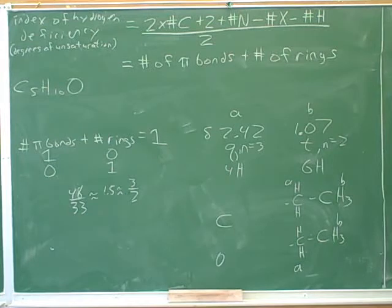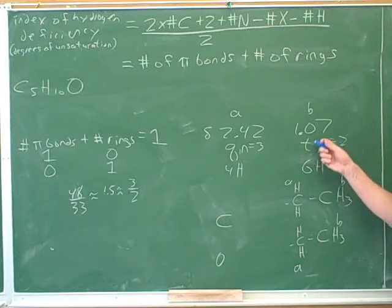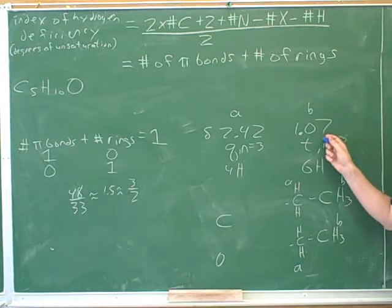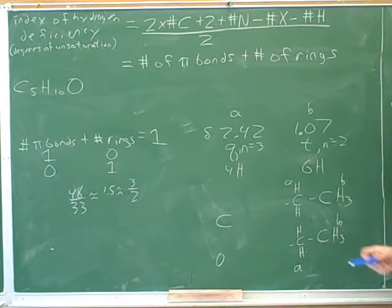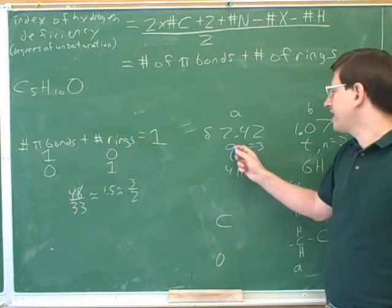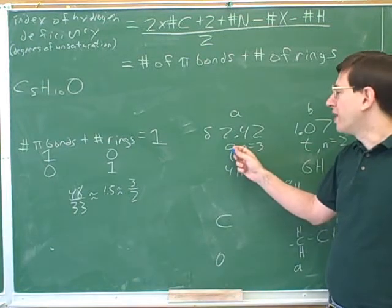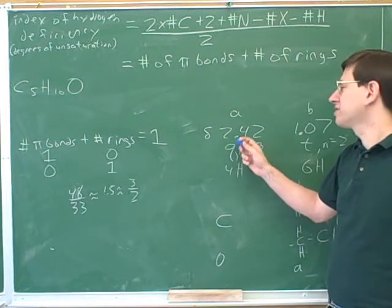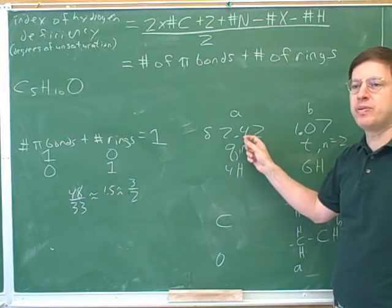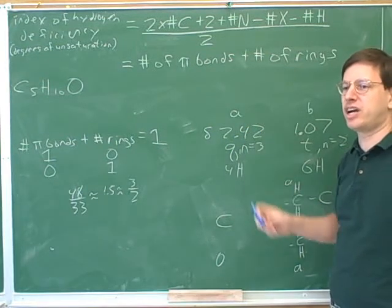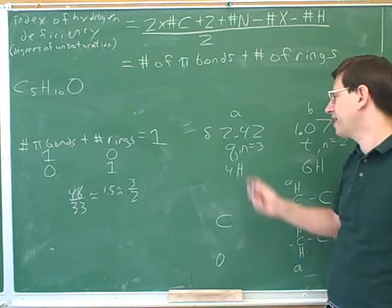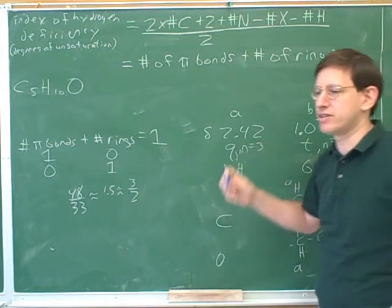We have to decide where to put the oxygen. Does it look like the oxygen is attached to the B carbon? Let's take a look at this data here. Is the oxygen attached to this B carbon? No, because this is not nearly far enough to the left. And does it seem like the oxygen is attached to the A carbon? Well, still no, because this is still to the right of 2.5.